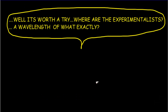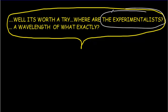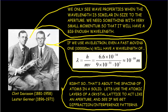De Broglie makes his prediction for the wavelength and issues a challenge to all the experimentalists: can you design an experiment to prove that this is really the wavelength of an electron? The two guys that answer the call are Clint Davisson and Lester Germer. They know that the primary thing waves do that particles don't is interference or diffraction, and that you only see diffraction when the size of your slit or obstacle is similar in size to the wavelength.